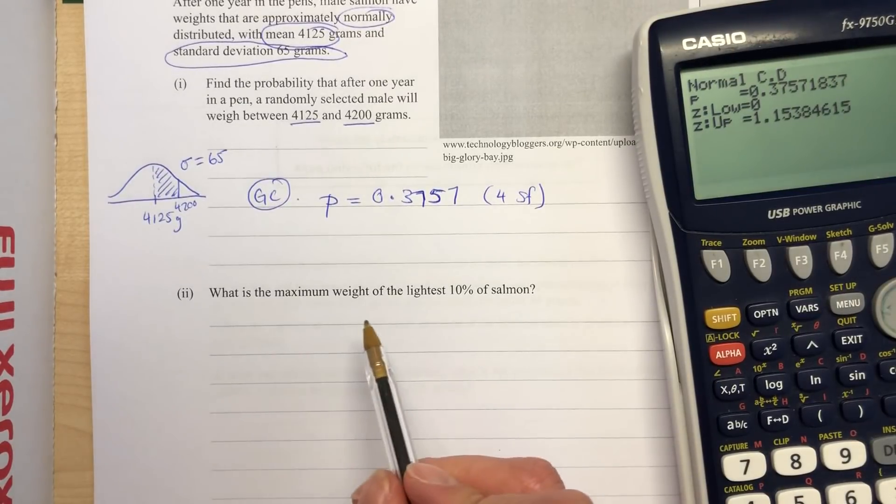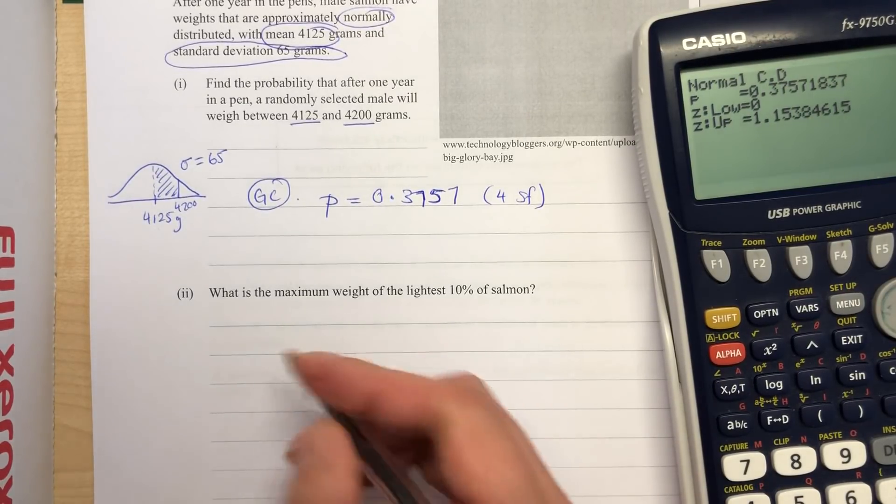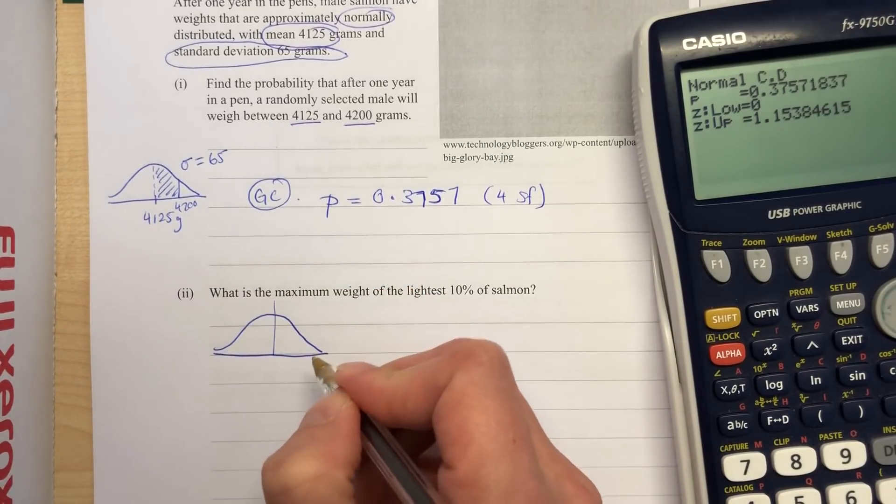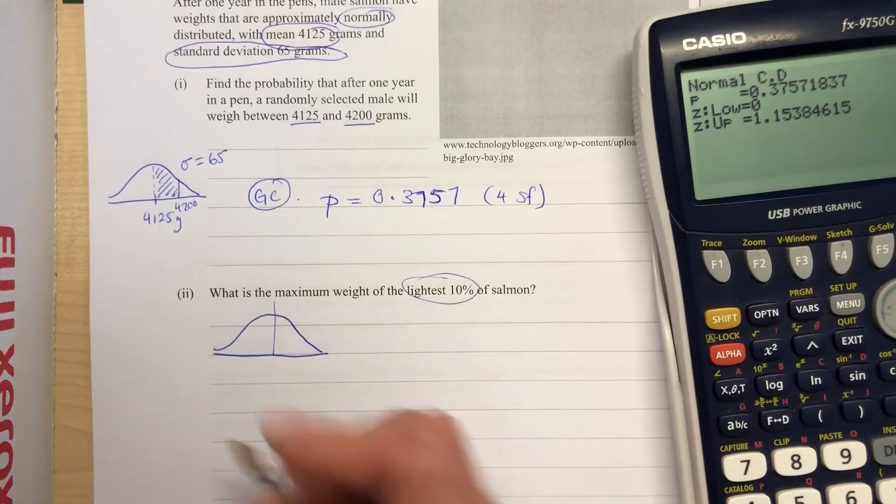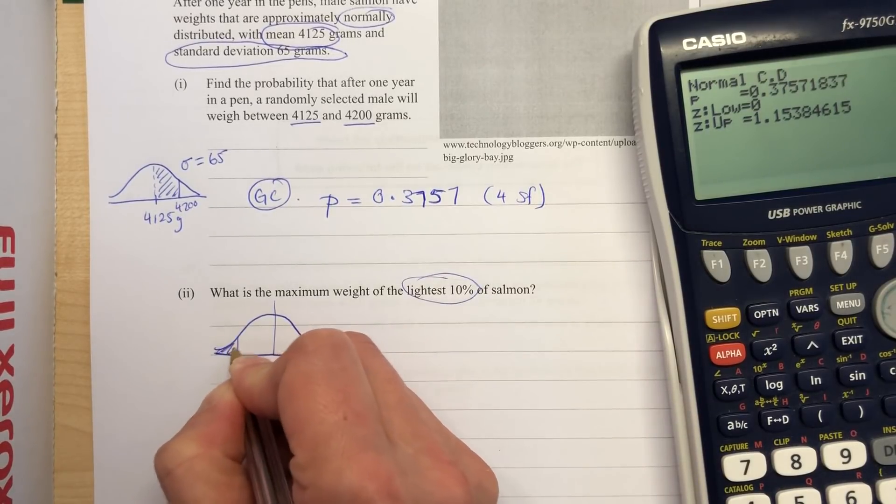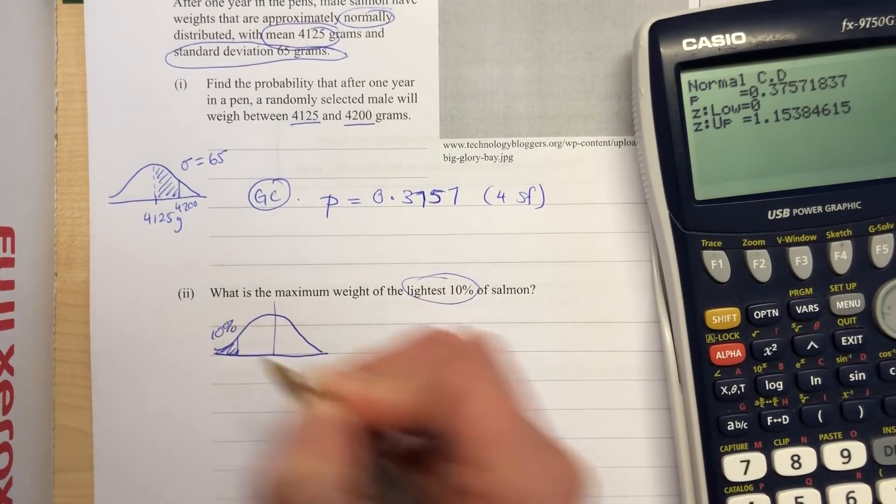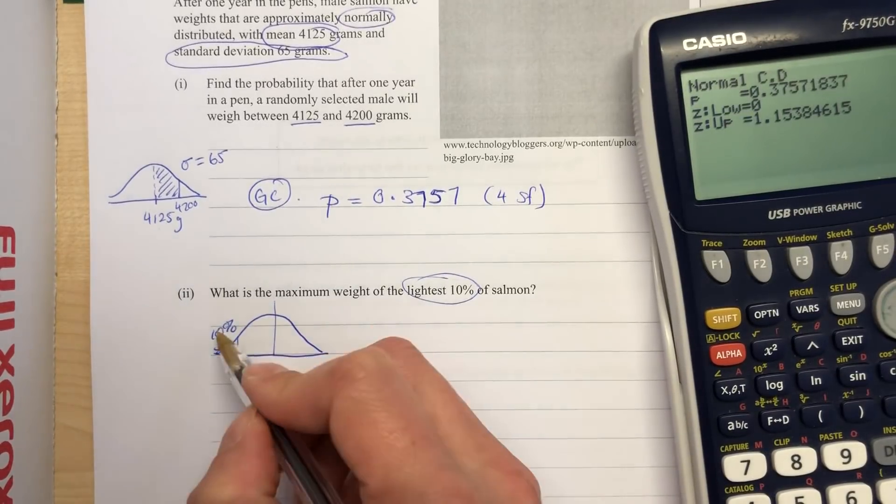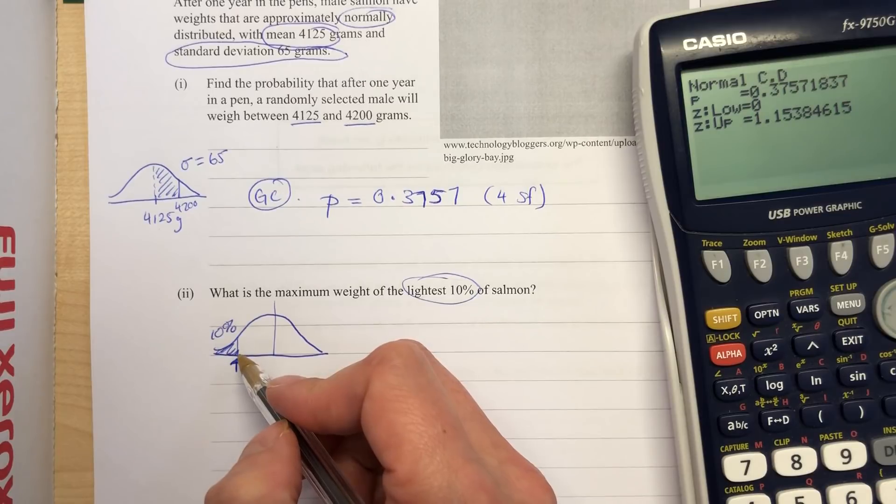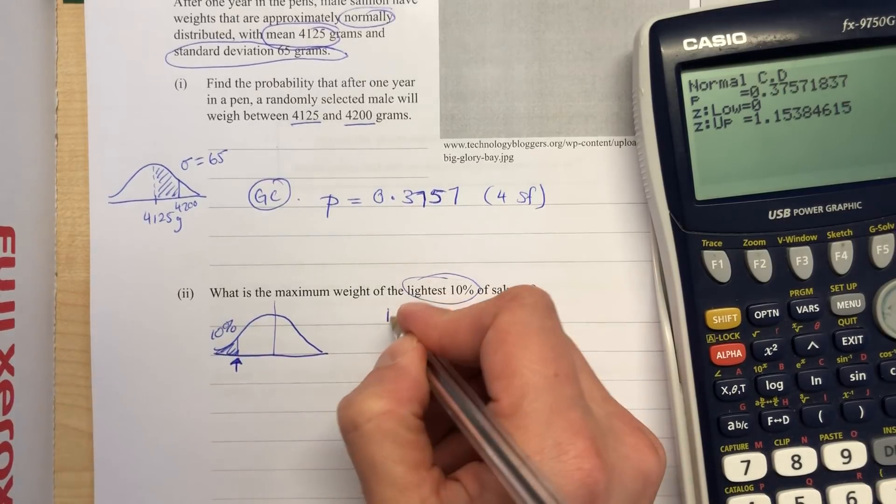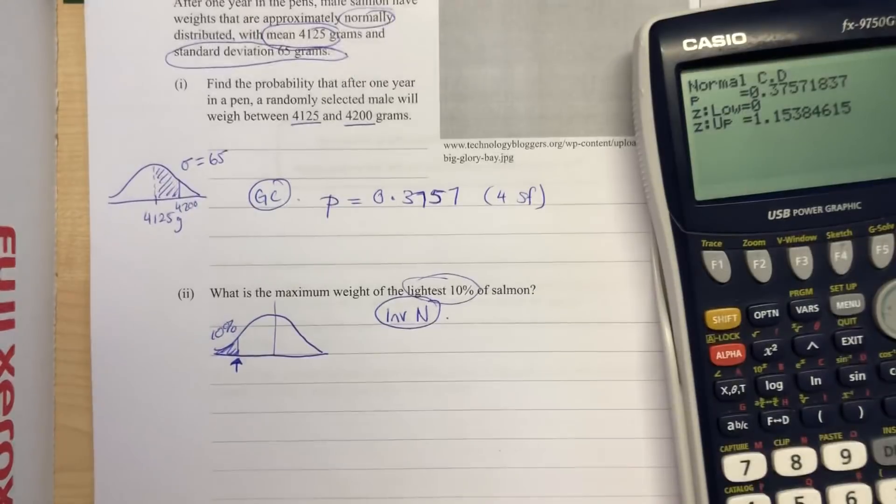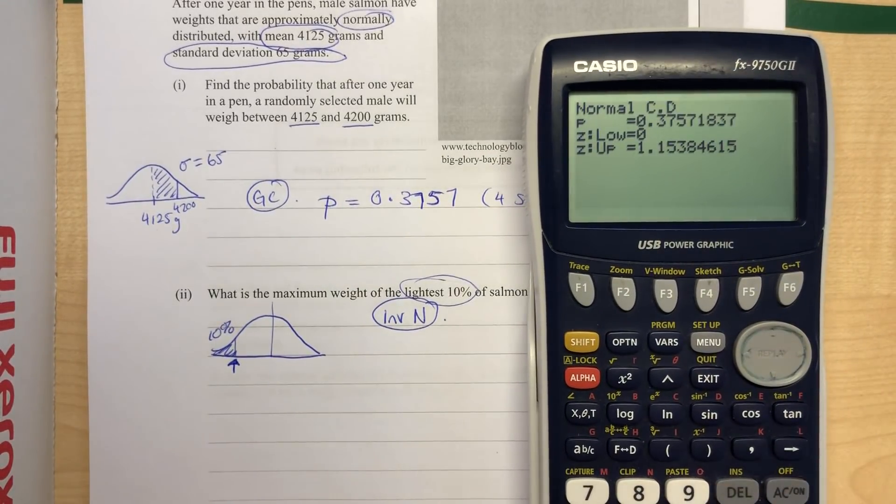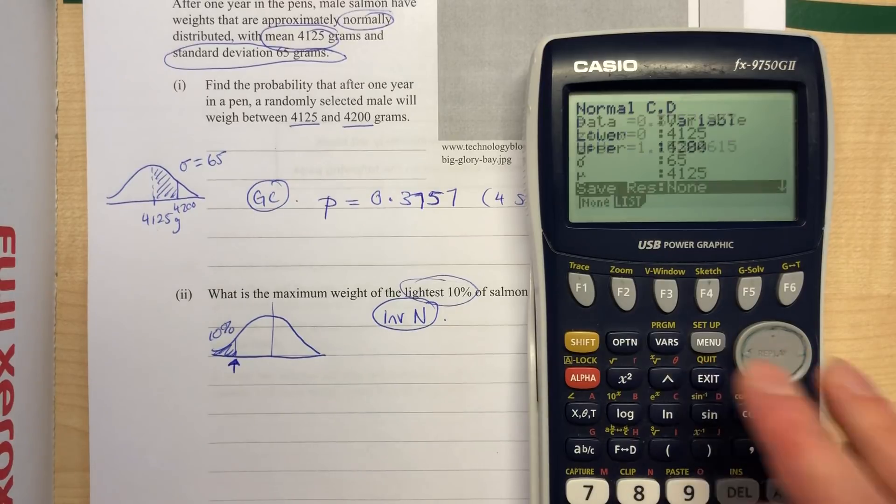Okay, next question, what's the maximum weight of the lightest 10%? So here's my picture, and always draw a picture for your normal distributions. We want the lightest 10%, so the smallest of those fish down here, 10%. We want to work out this value right here. And where you've got a probability and we're working backwards to a value, that means we are doing the inverse normal, because we're going backwards. We don't have a number to work out its probability, we've got a probability to work out its number.